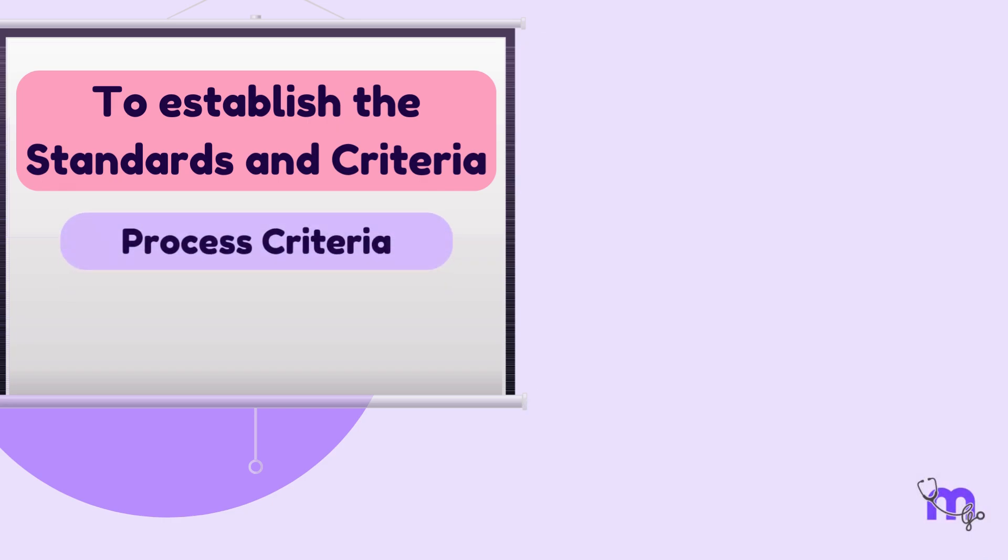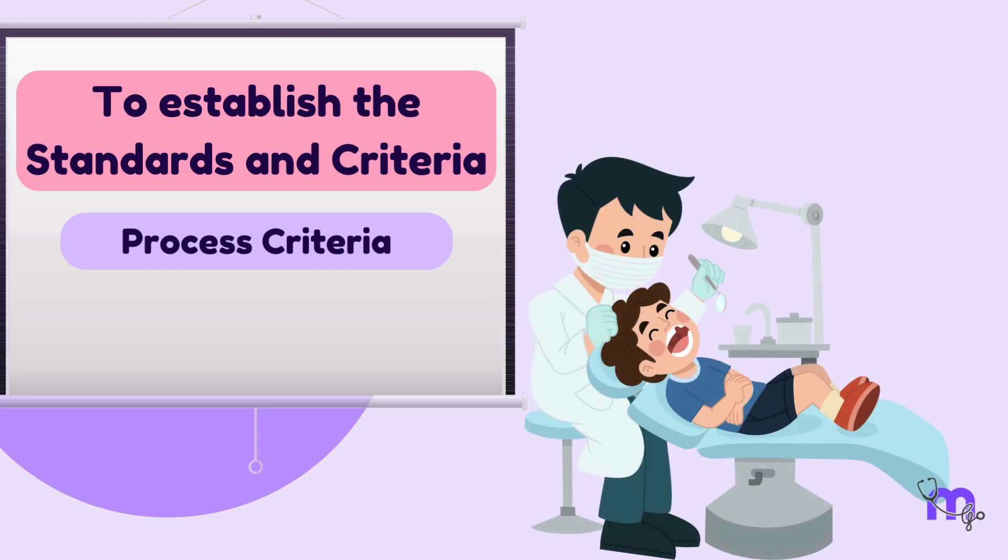Similarly, process criteria could be understood with the example of conducting the process of dental check-ups every six months for school-going children to prevent or treat any dental condition while it is in its early stages.